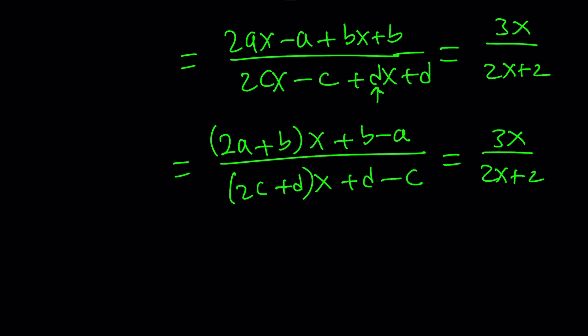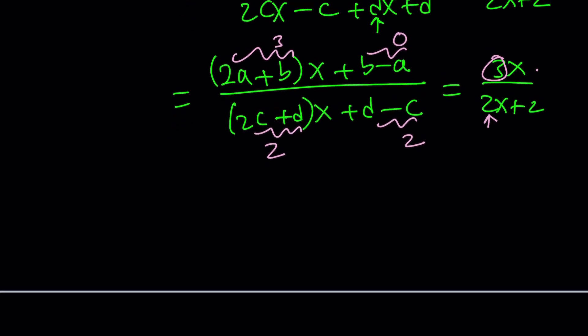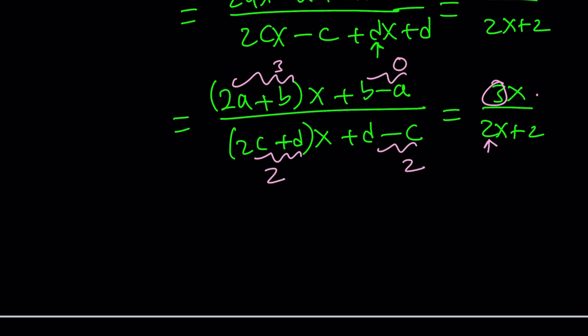Now, we do know that the coefficient of x in the numerator is 2a plus b or 3. So 2a plus b must be 3. And b minus a, there's no number here, so that needs to be 0. And the denominator, the coefficient of x is 2, so this needs to be 2 and this needs to be also 2 because that's the constant term. That basically gives us two systems of equations with two variables each.